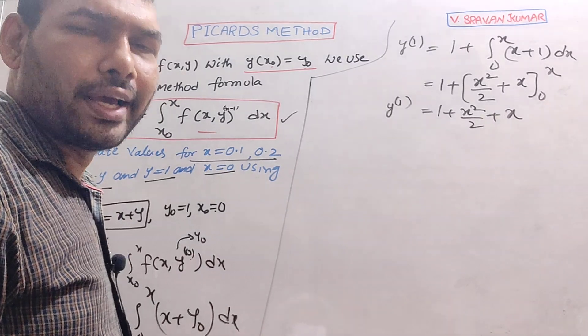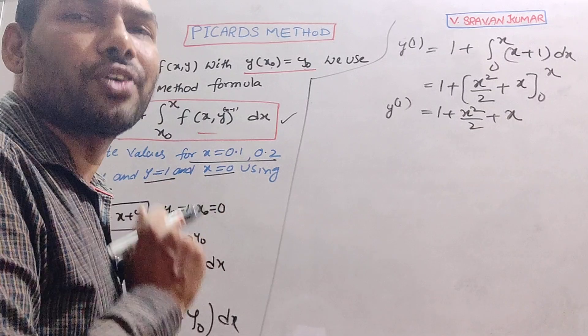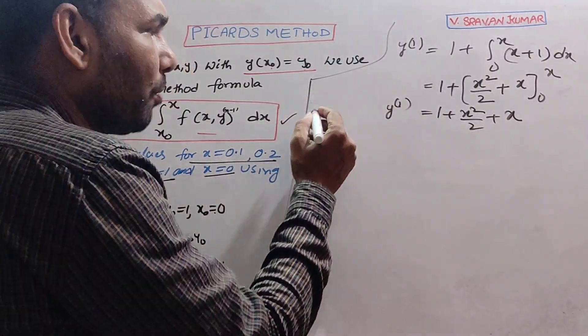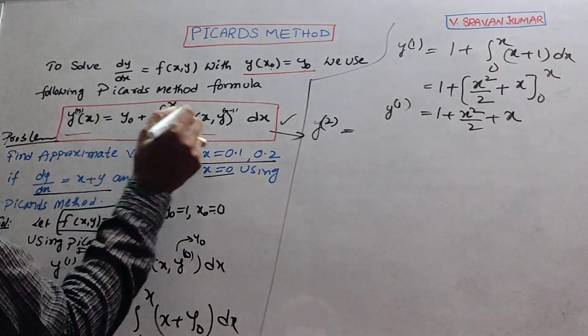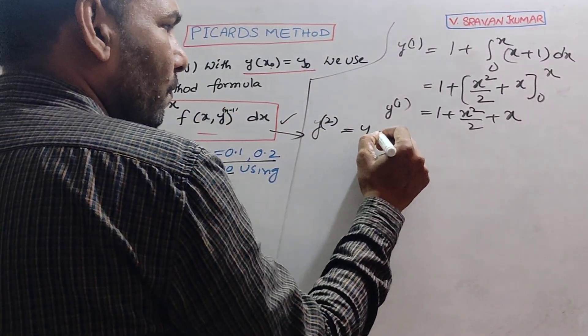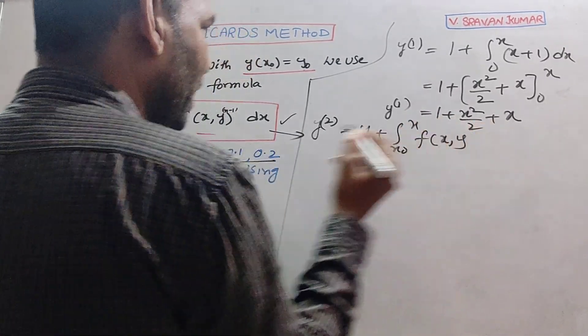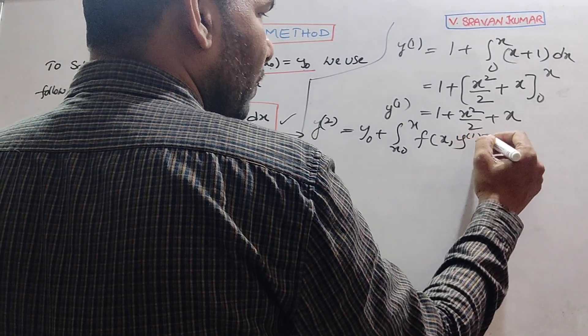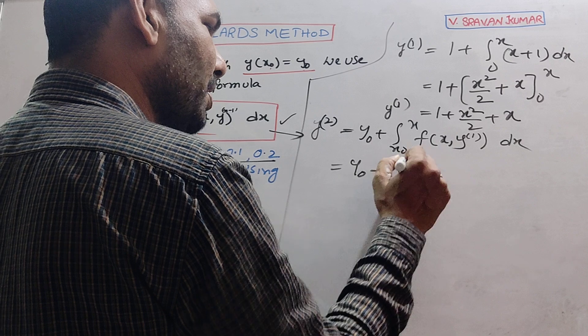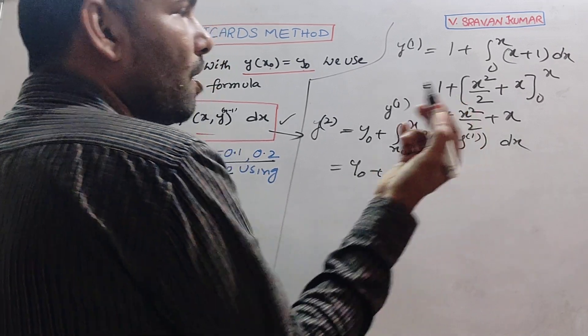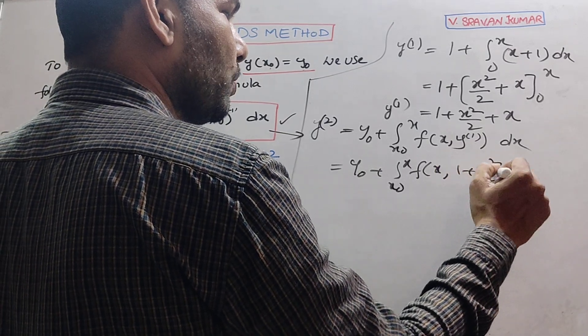To find y², y₀ plus integral x₀ to x f(x, y¹) dx. Now substitute: y₀ plus integral x₀ to x f(x, y¹), where y¹ is 1 + x²/2 + x. Now treat this one as x, this one as y. f(x,y) in this problem is x plus y.